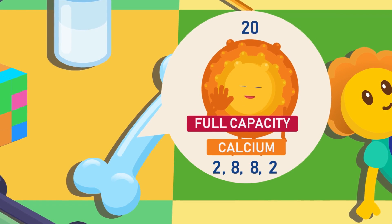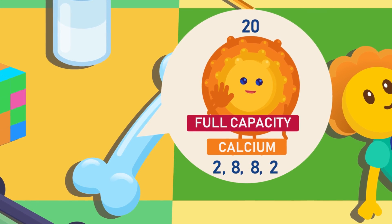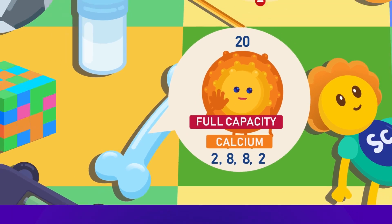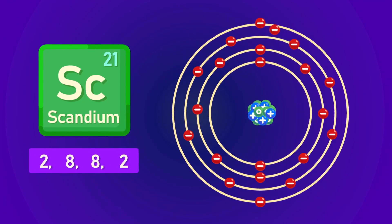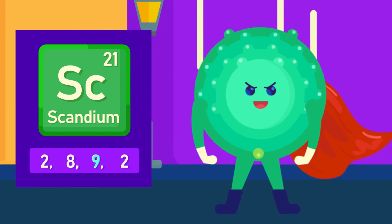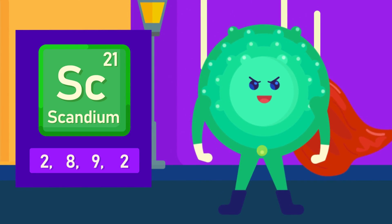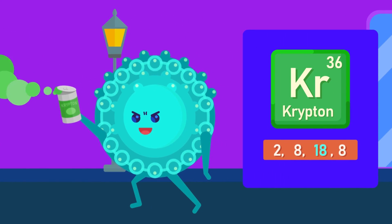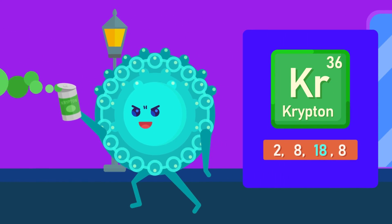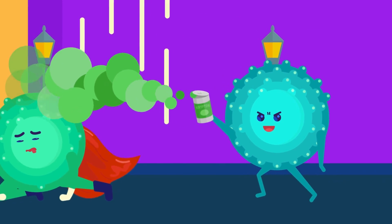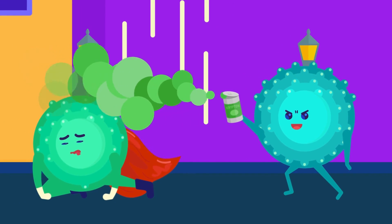Please remember that this only holds true until here. When the atomic number is more than 20, the third and the next shells will be filled differently. For example, the third shell can fit up to 18 electrons. It will be discussed in a later video.